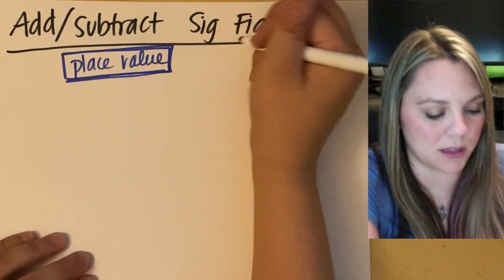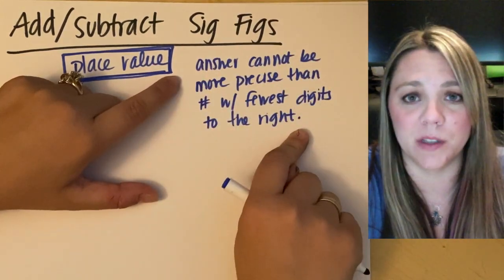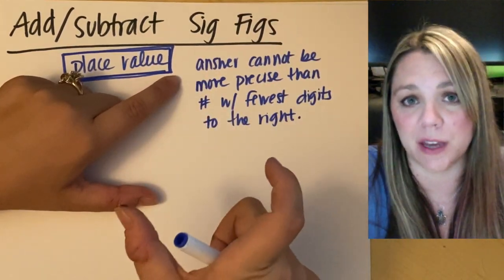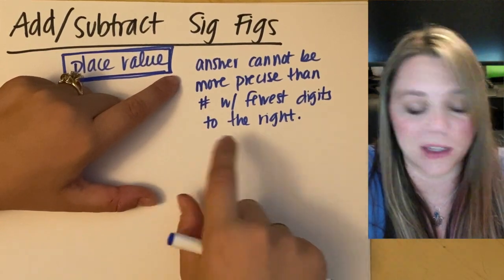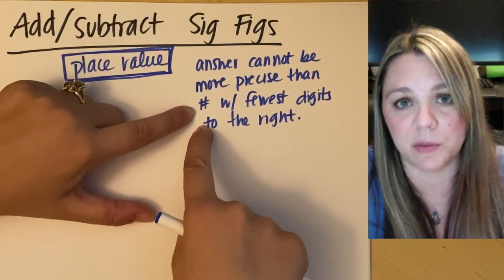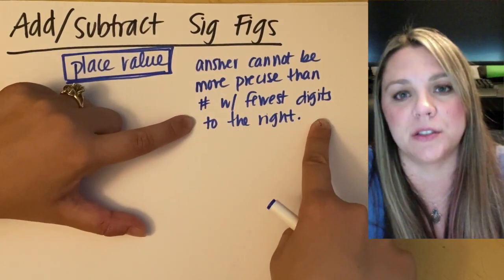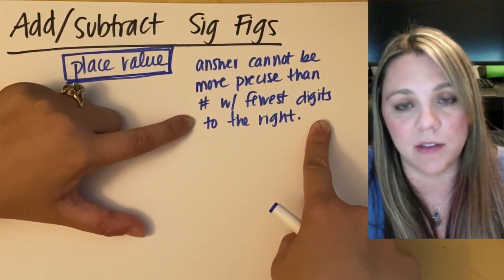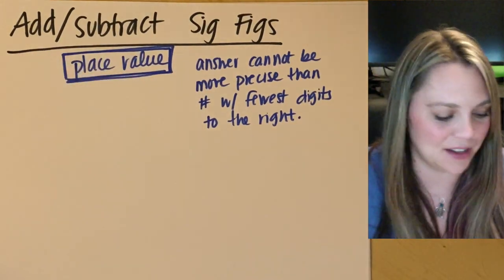We'll just look at an example. What your book will describe this as is that the answer you get, the sum or difference from adding and subtracting, it cannot be more precise than the number you started with that has the fewest digits to the right. If that doesn't make sense to you, don't worry, we're going to break it down.